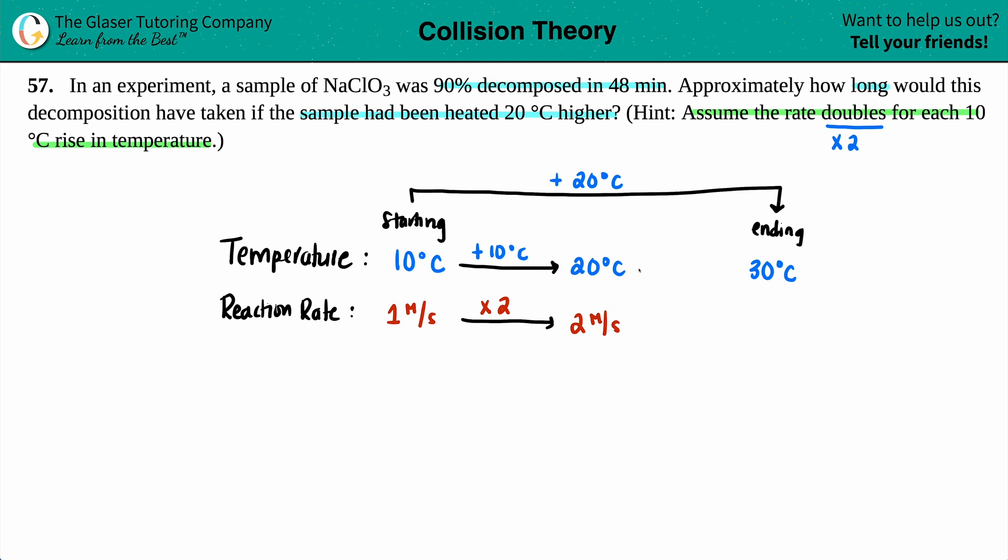We got to do it one more time because we need to get to that 30 degrees. So if I am going from 20 to 30, that's an additional 10 degree jump. And because of that, the rate is going to double again. The rate doubles every time that 10 degrees increases. So now two times two is four molarity per second.